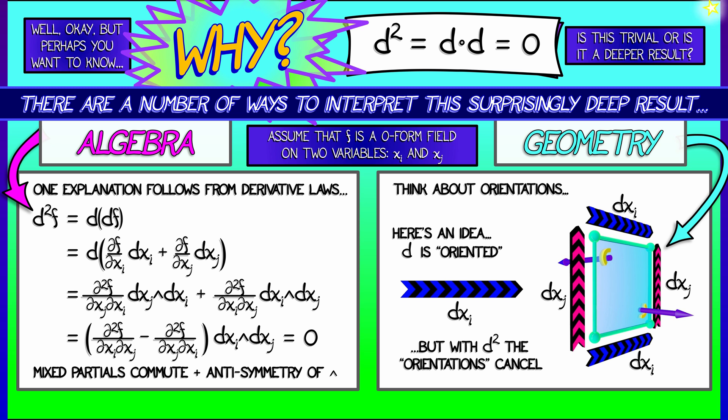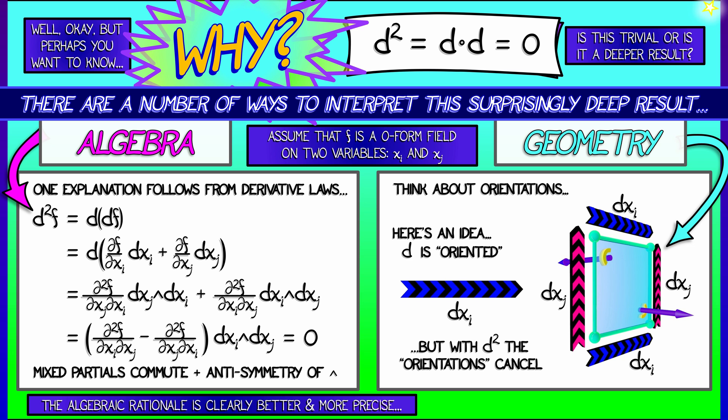When you try to put those two together, it's as if the orientations cancel. Now that is not terribly correct. That's not really precise. The algebraic explanation is clearly better and more mathematically correct.